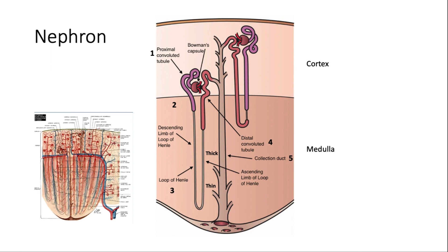The nephron is our major filtering and reabsorption unit of the kidney — it's what allows us to maintain balance in the body. There are many nephrons, each with a glomerulus and a loop of Henle. There are five portions: the proximal convoluted tubule, which has a convoluted twisted portion and a straight portion; the loop of Henle with its descending and ascending limbs; the distal convoluted tubule, which wraps right next to the glomerulus; and finally the collecting duct, which takes urine out of the body.